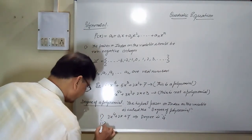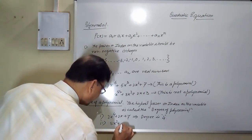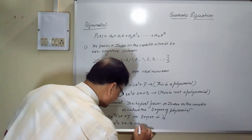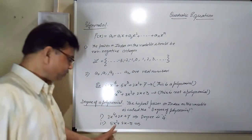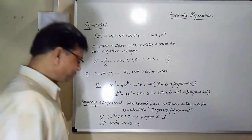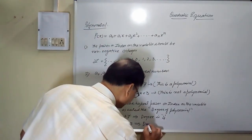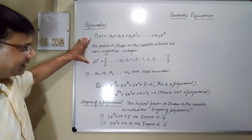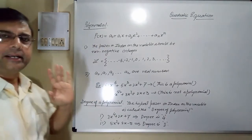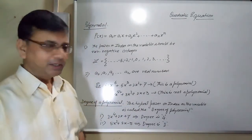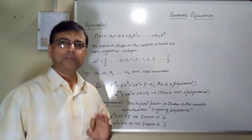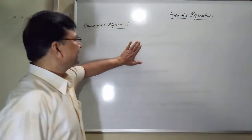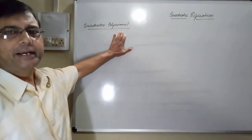Second case: 5x² + 2x − 5. What is the degree? The highest power on the variable is 2, so the degree is 2. That is what polynomial and degree of polynomial mean — and it should be clear to all of you. Now I will talk about quadratic polynomial.